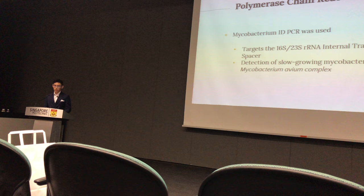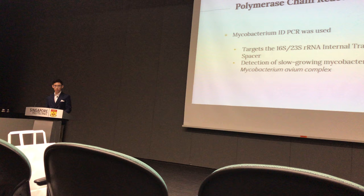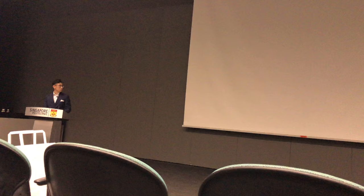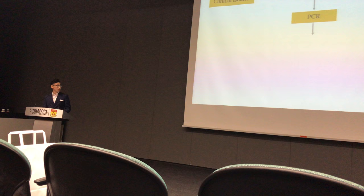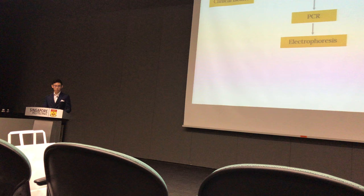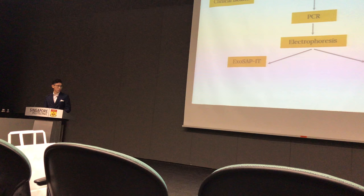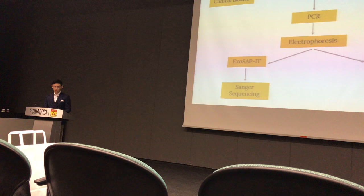For the polymerase chain reaction, we used the Mycobacterium ID PCR, which targets the 16S–23S internal transcribed spacer, thus allowing identification of slow-growing mycobacteria, and in this case Mycobacterium avium complex. For every clinical isolate, two aliquots were made. Both aliquots underwent PCR to amplify the DNA content, and were then subjected to agarose gel electrophoresis to track for amplification. One aliquot was used for detection by the Genotype NTM DR Kit, while the other underwent PCR product cleanup using the ExoSAP-IT Kit, whereby an enzyme hydrolyzes excess primers and nucleotides to ready the sample for Sanger sequencing.